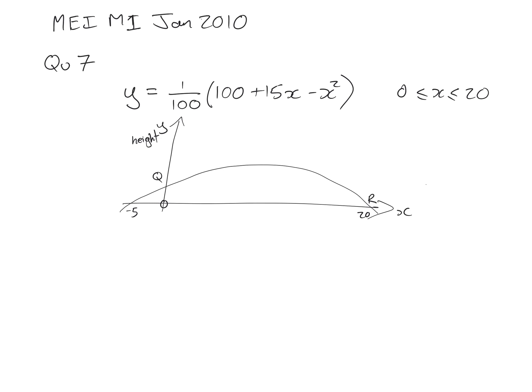write down the height of Q above the ground. So, part 1, when X equals 0, Y equals 1 over 100 times 100 equals 1. There we go, so at Q, X is 0, and Y is 1, so let's label that on, so that's 1.